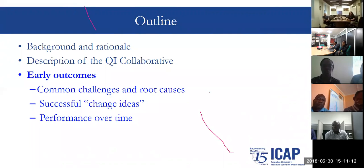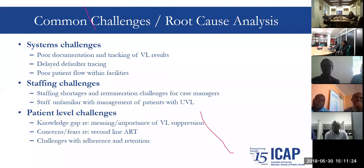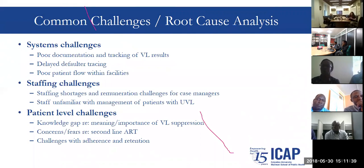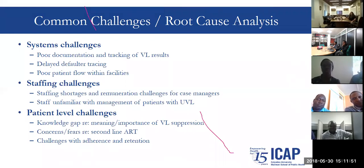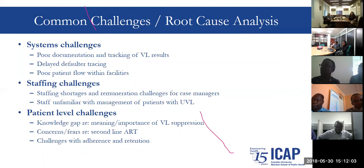In early outcomes, we identified common challenges and root causes. After a thorough root cause analysis, challenges were categorized under: system challenges — poor documentation and tracking of VL results, delayed default tracing, poor patient flow within facilities; staffing challenges — staff shortages, remuneration challenges for case managers, staff unfamiliar with management of unsuppressed VL patients; and patient-level challenges — patient knowledge gaps about the meaning and importance of VL suppression, fears about switching to second-line ART, and challenges with adherence and retention.